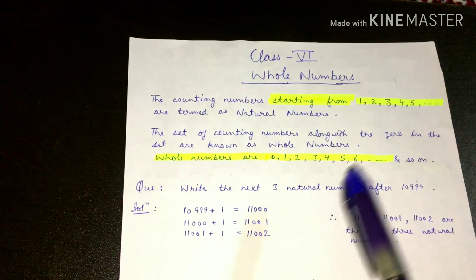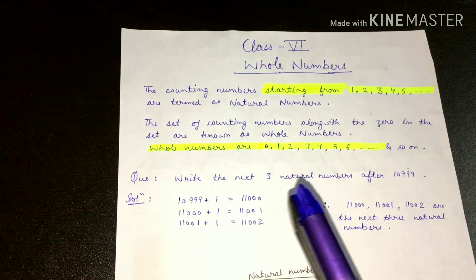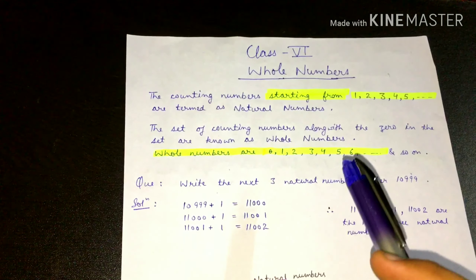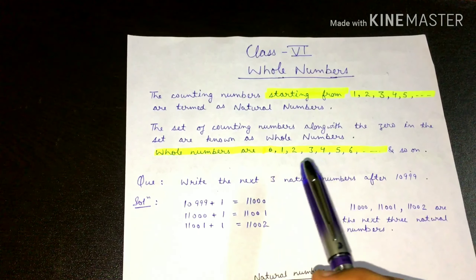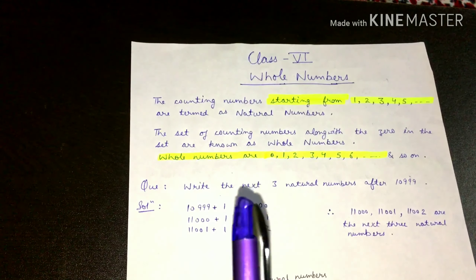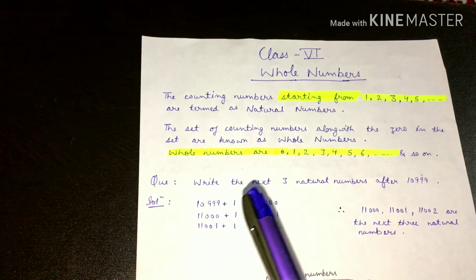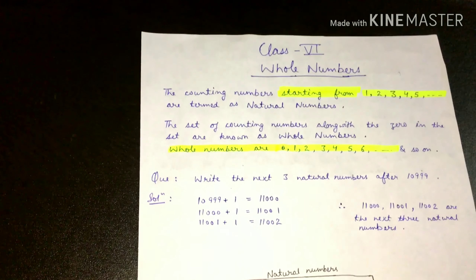Agar hum us set mein zero ko add karte hain toh woh whole numbers ban jaate hain. Whole numbers wo numbers hote hain jo zero se start hote hain — jaise natural numbers one se start hote hain, whole numbers zero se start hote hain. This is the difference between whole numbers and natural numbers.